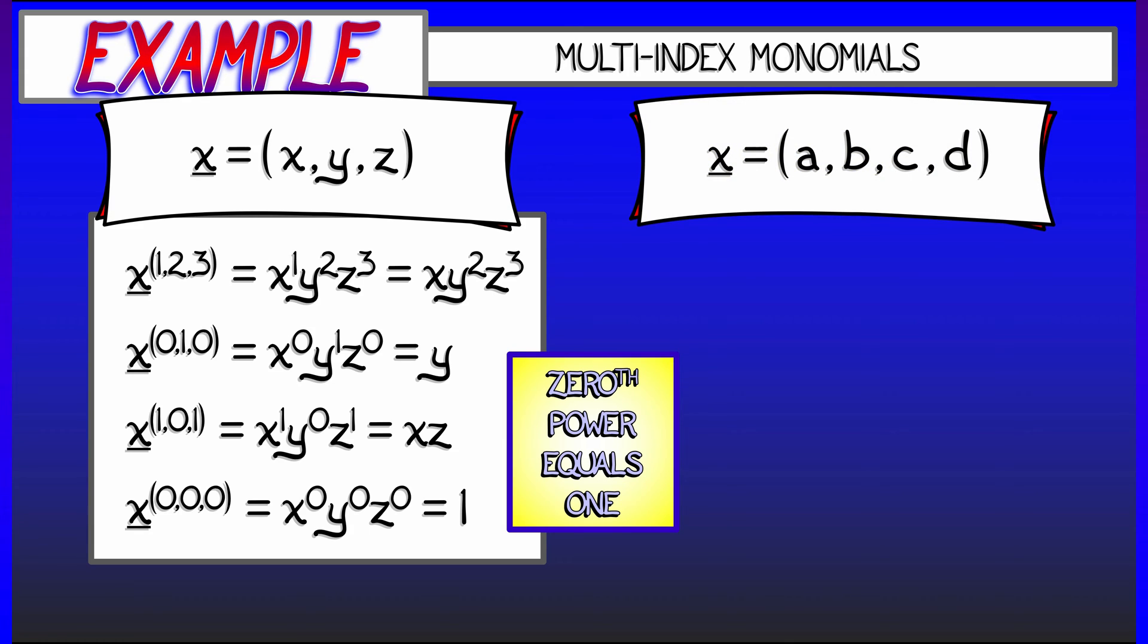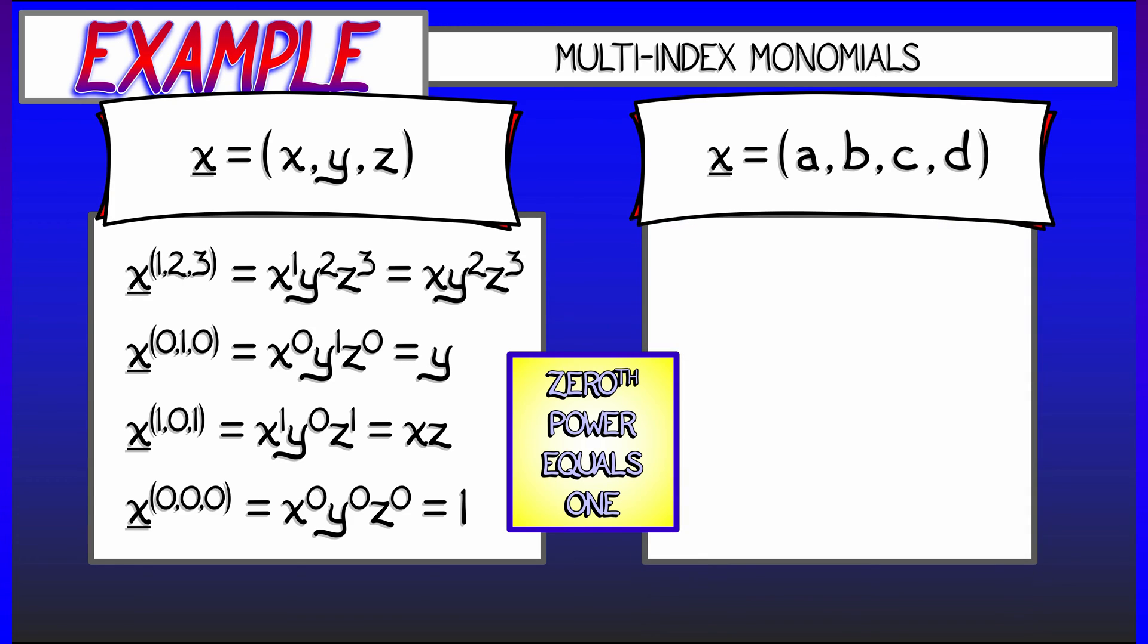Okay, let's say that instead of three variables, we have four. Let's call them a, b, c, d. Why not? Then, this is not going to be any more difficult. What is x to the (1, 2, 3, 1)? Well, that's simply a, b squared, c cubed, d, all multiplied together.